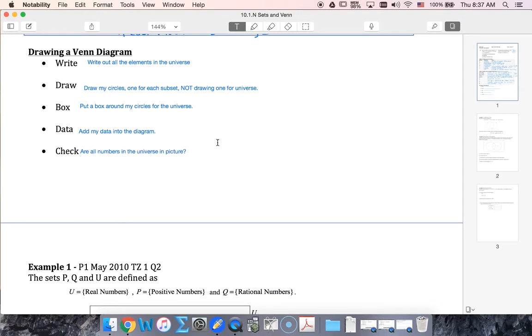So let's say that our universe is the set of numbers X such that X is an element of natural numbers, where 1 is less than X is less than 15.